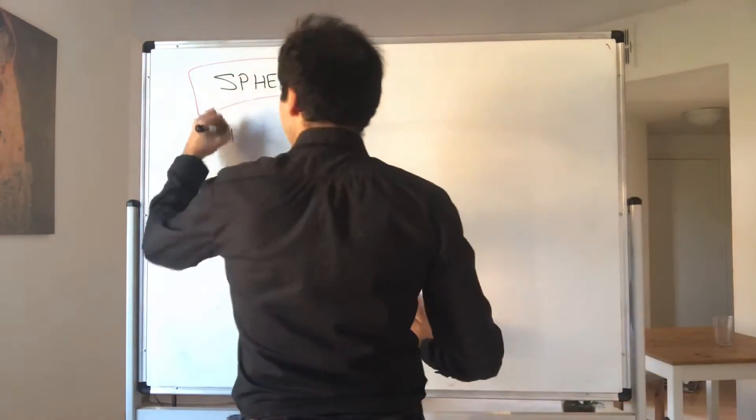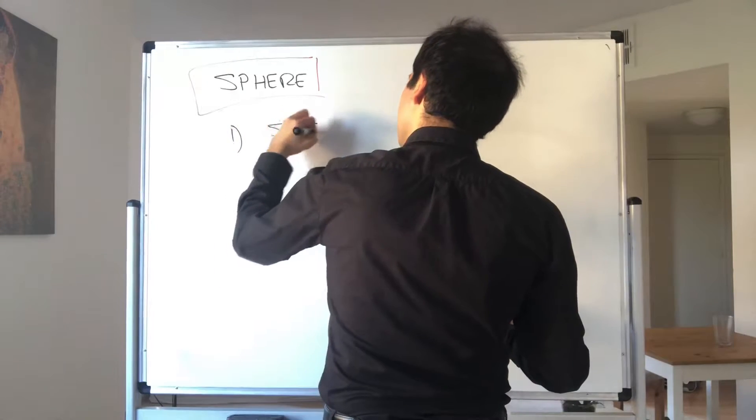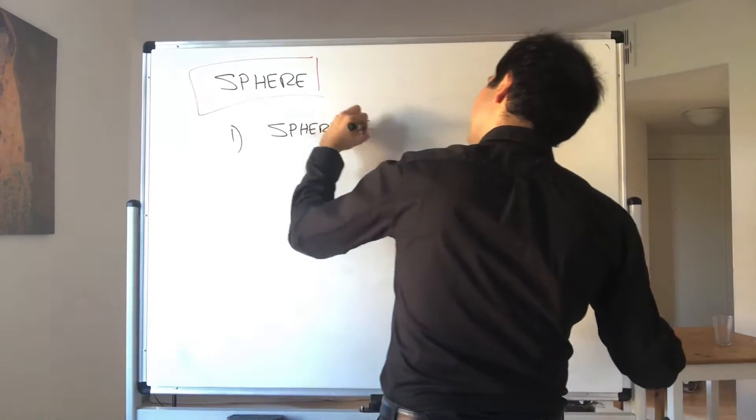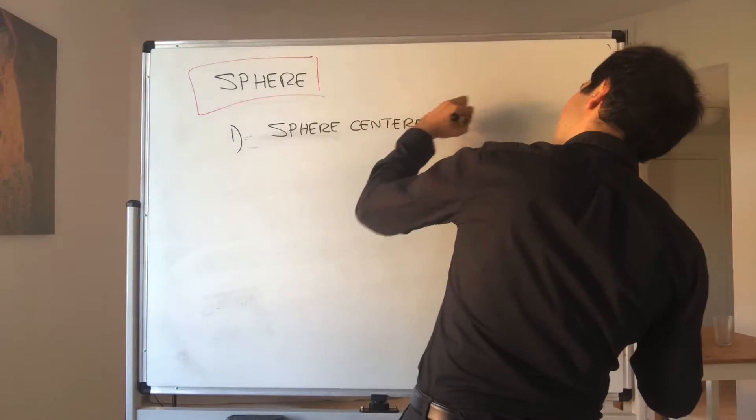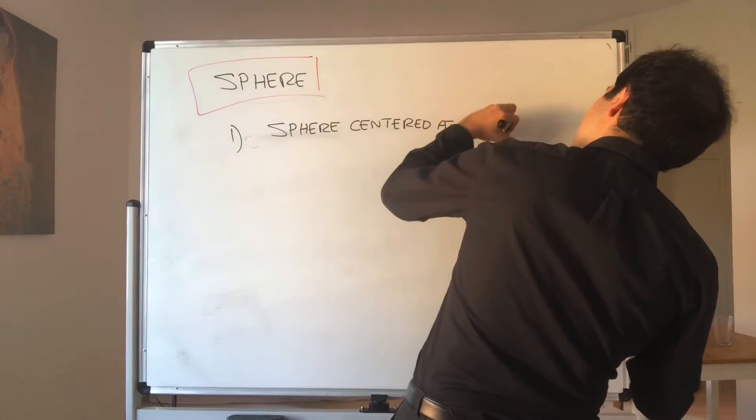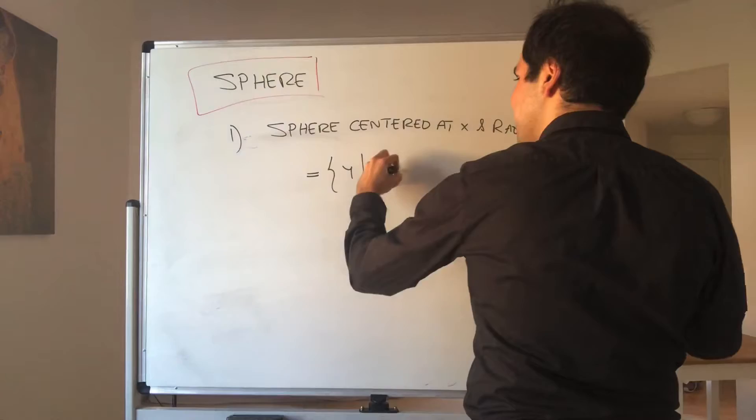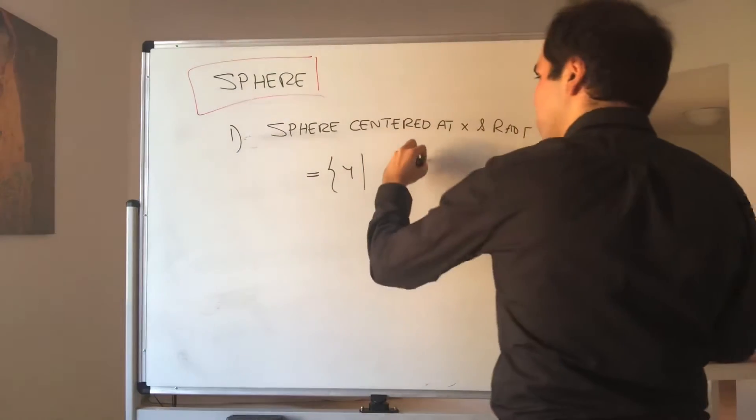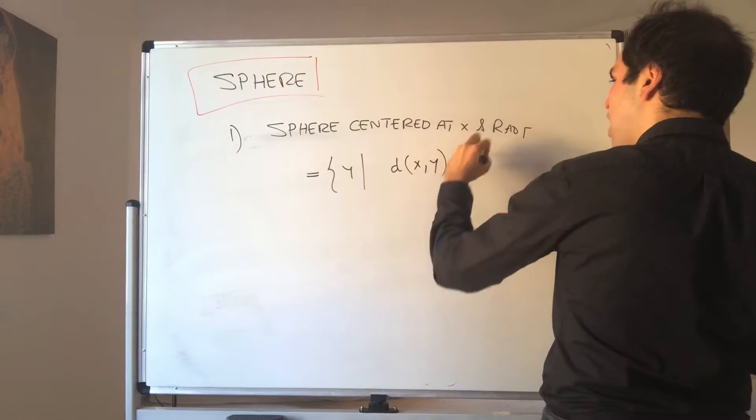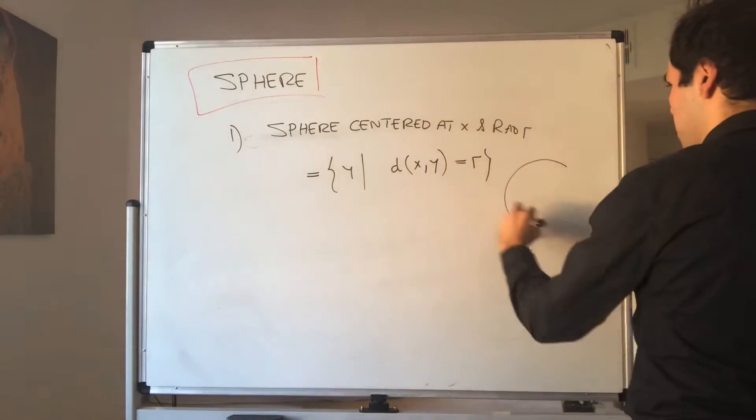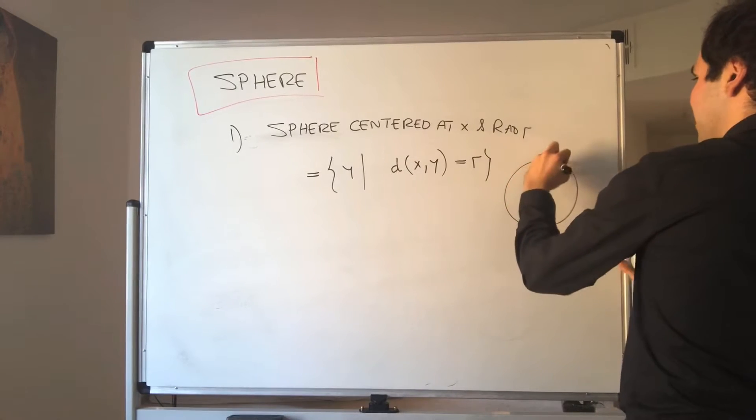Let me just remind you a couple of terminology. First of all, you have the sphere centered at x and radius r. That is the set of all points that are exactly a distance r away from x. So the set of y such that the distance between x and y is equal to r. So this is x, and this is r, and this is y.